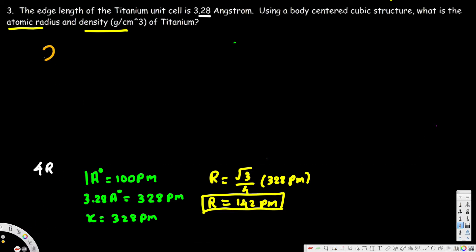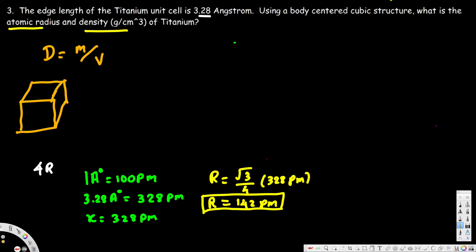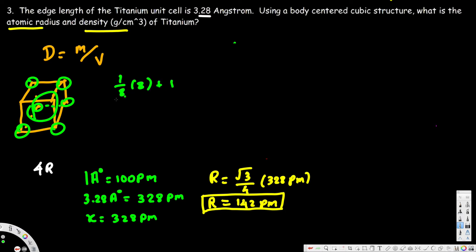For a body-centered cubic structure there are two atoms per unit cell. Let's see why: in each of the eight corners we have one-eighth of an atom, and in the middle we have one full atom. So (1/8 × 8) + 1 = 2 atoms per unit cell.